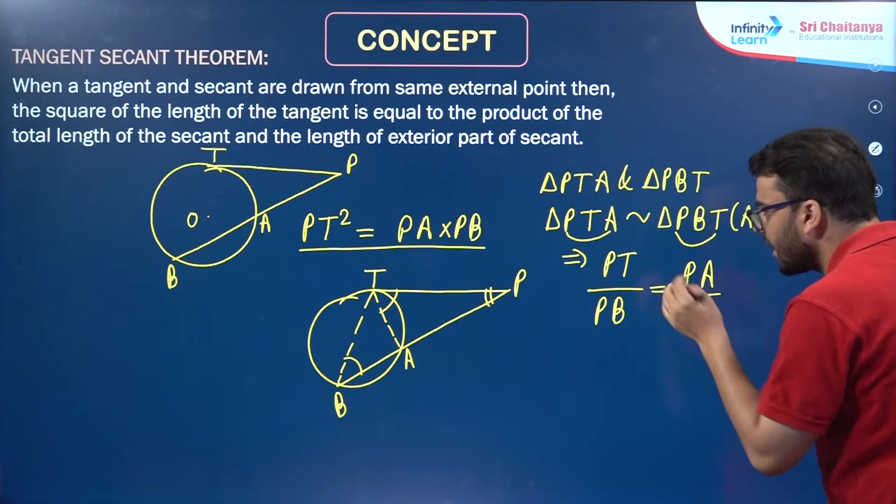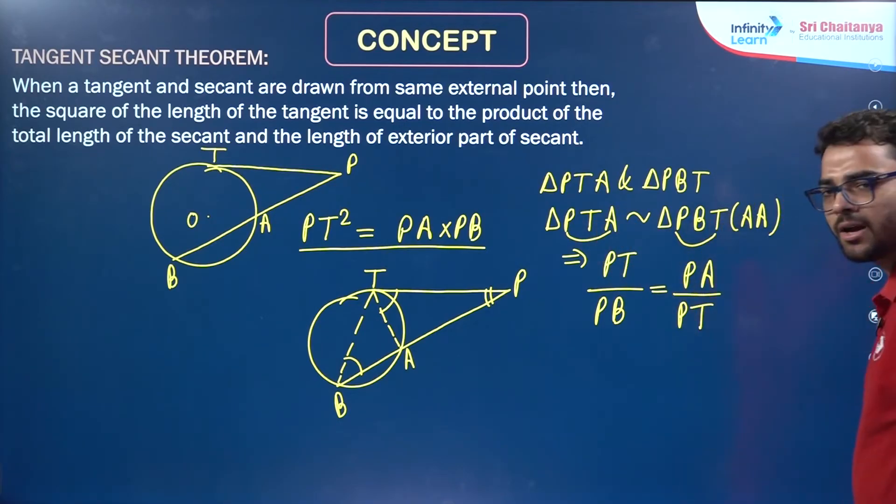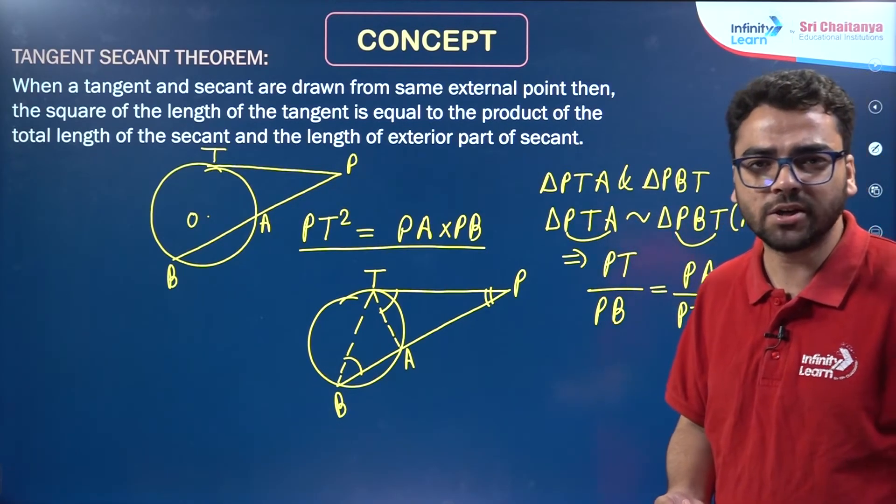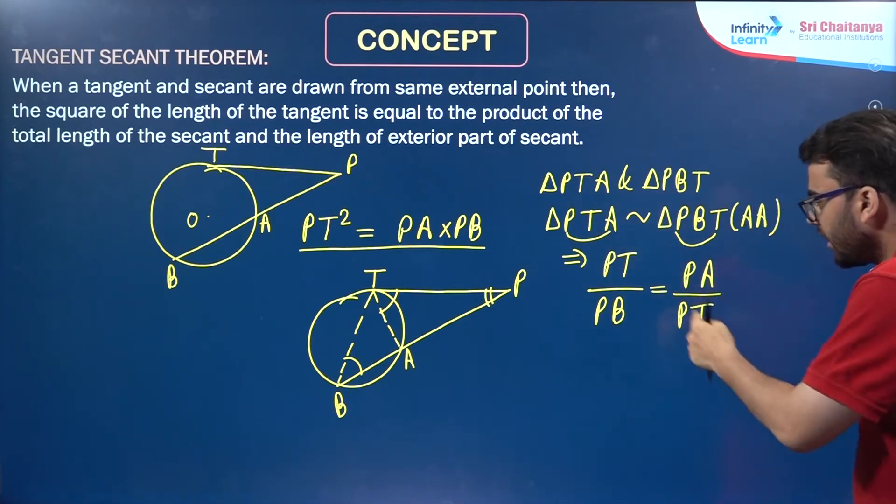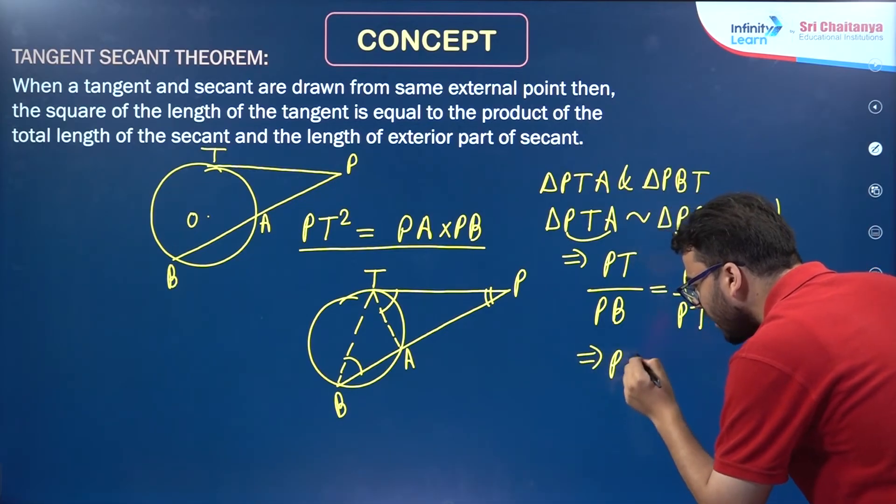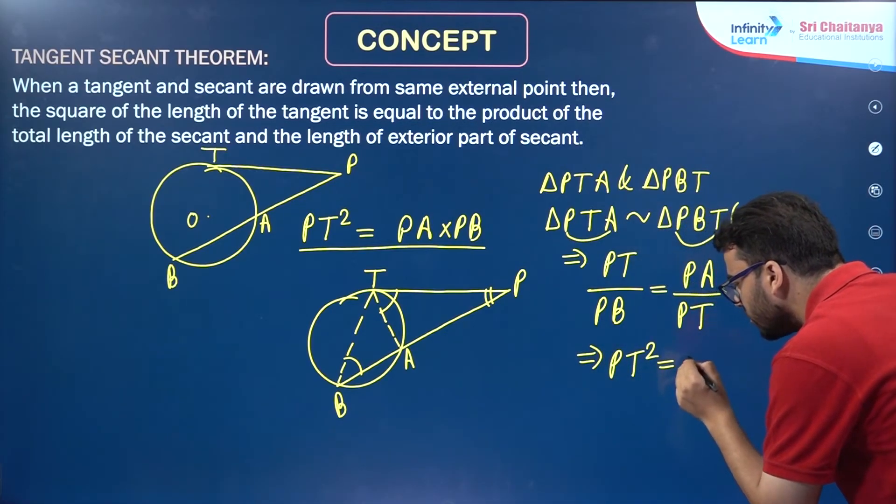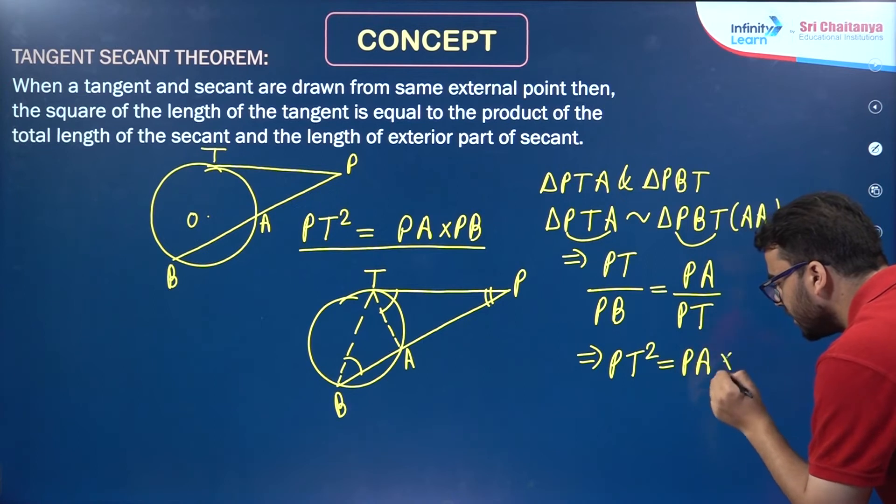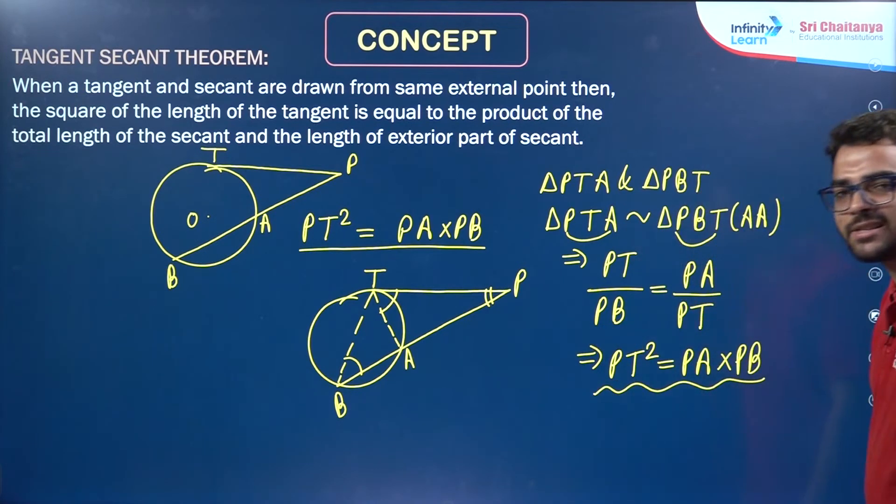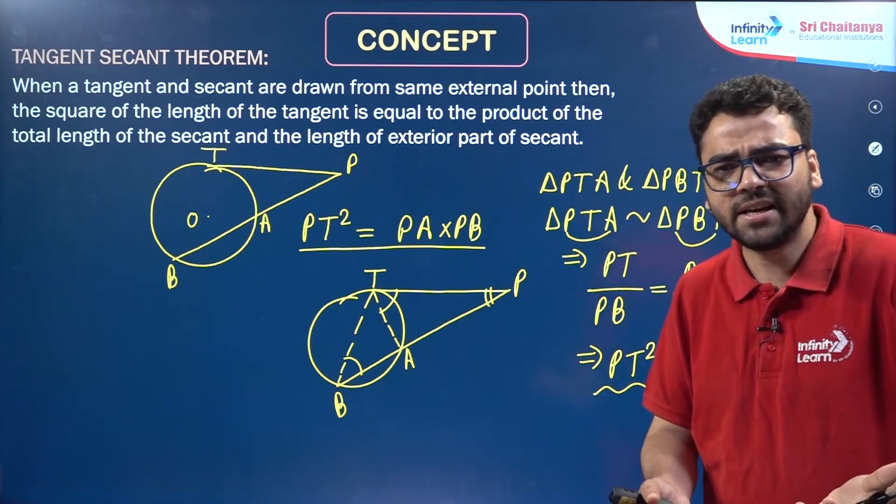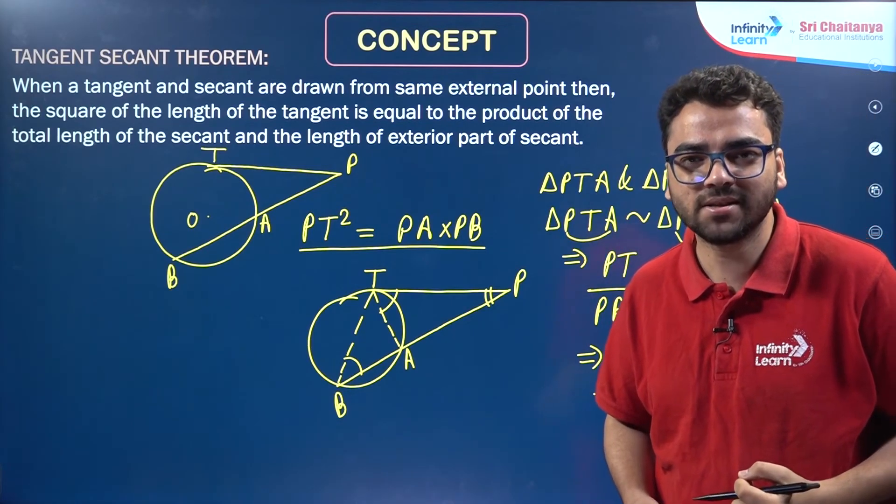You might ask why we're not using TA and BT - that's not required in this proof. If you cross multiply, you get PT² = PA × PB. That's the proof of the tangent secant theorem using similarity of triangles.